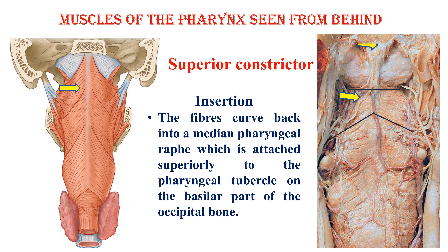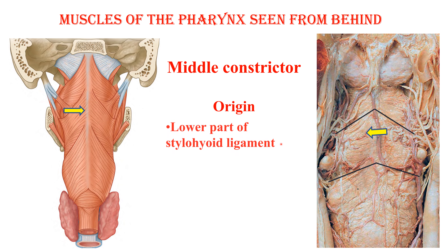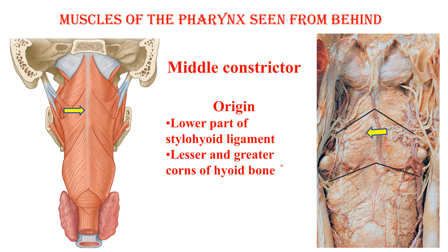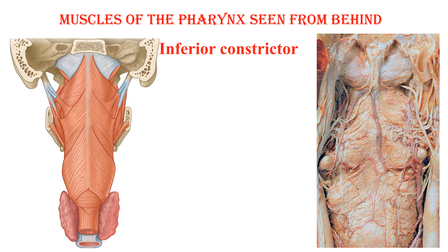The middle constrictor — its origin is from the lower part of the stylohyoid ligament and the lesser and greater cornua of the hyoid bone — and it is inserted into the raphe.